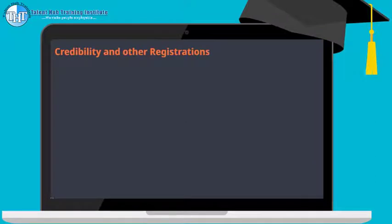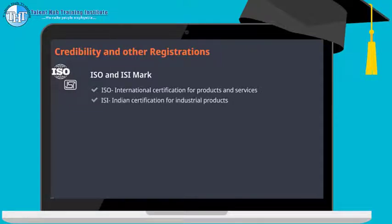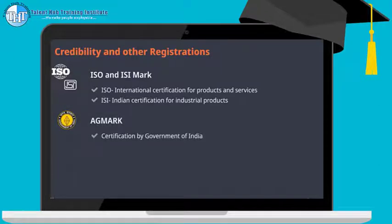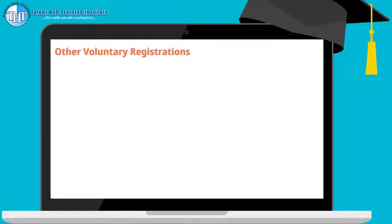Credibility registrations: the government has mandated this type of registration for manufacturing certain products which must qualify according to set standards, increasing the credibility of the entity. ISO is an international certification to certify that products or services are of significant quality. ISI is a certification based on Indian standards for industrial products. Many companies enter into contracts only with entities having ISO or ISI marks. AG Mark is a certification mark for agricultural products provided by the government of India, showing product quality according to set standards, and is mandatory for certain specified agro-products. BIS Hallmark is for jewelry made of gold and silver, showing the purity of gold or silver used; using such a mark increases customer trust.